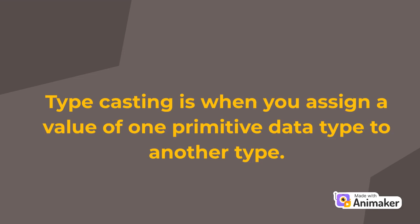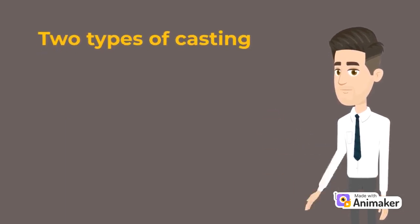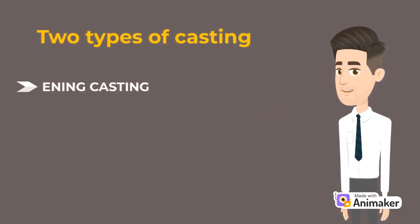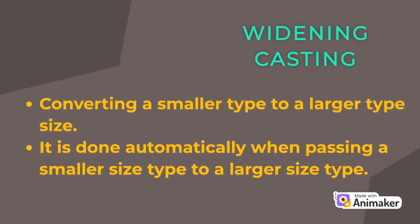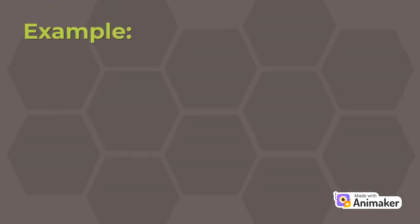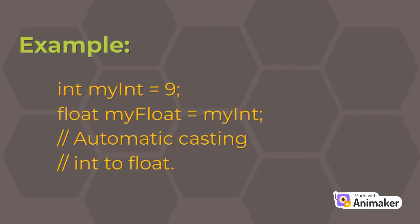In Java language, type casting is when you assign a value of one primitive data type to another type. There are two types of casting: widening casting and narrowing casting. Widening casting is done when converting a smaller type to a larger type size and it is done automatically. For example, here we are converting an integer value to a float value, and we do not have to convert explicitly — rather it is done automatically.